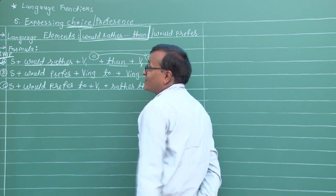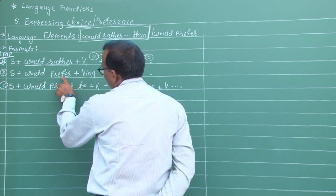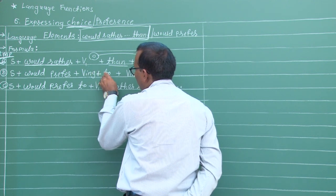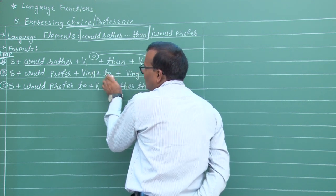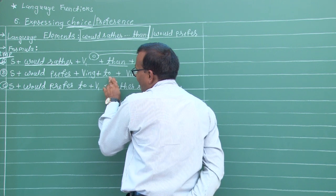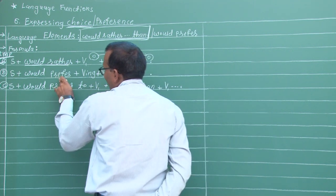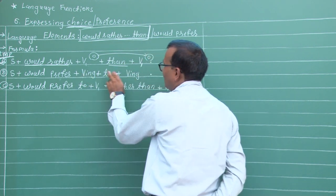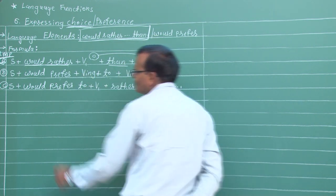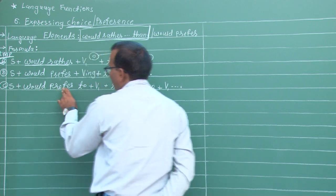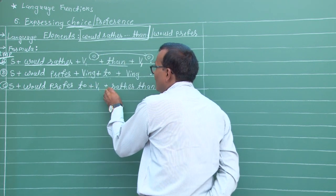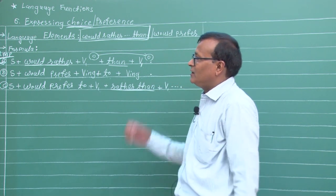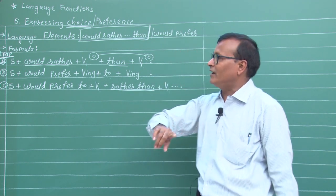Would Prefer - પસંદ કરું - ત્યારે 'prefer' પછી 'to' આવે. Subject + Would Prefer + infinitive (to + verb) + Rather Than + gerund (verb+ing). 'To' ની આગળ-પાછળ gerund ના સંદર્ભ માં લેવામાં આવે. Subject + Would Prefer + infinitive + Rather Than + gerund - આ પ્રકારની વાક્ય રચના છે.